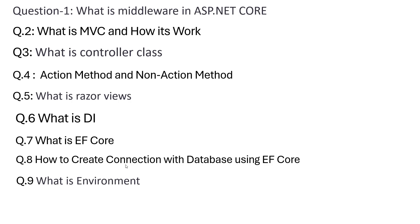What is an environment? An environment has specific settings for your application. There are three types: Development, Staging, and Production. What is Kestrel server? It is a lightweight web server that only works in development mode, used for debugging and testing your application in the console.